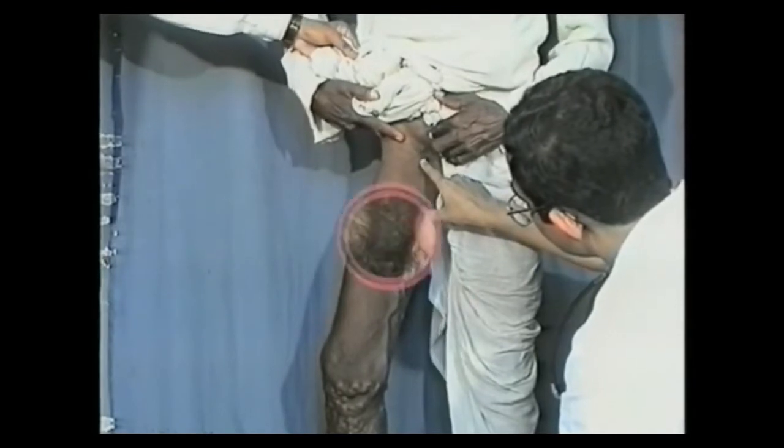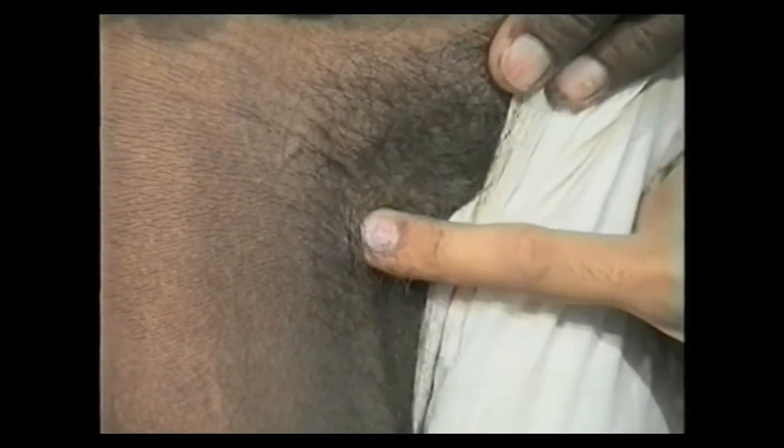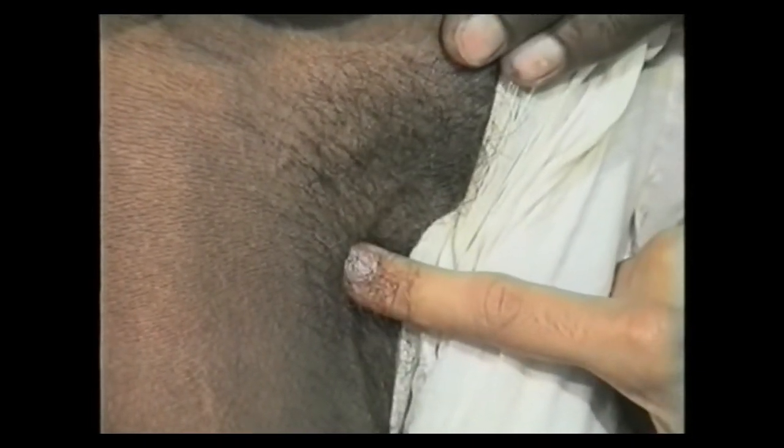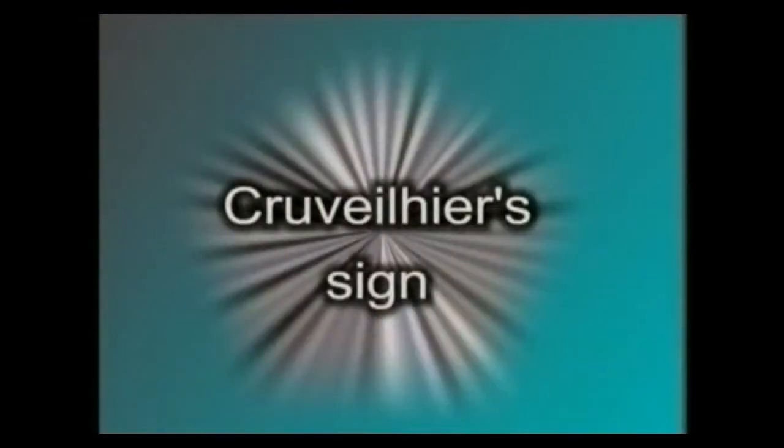Now keep your hand over the saphenous opening, which is located 3.8 centimetres below and lateral to the pubic tubercle, and ask the patient to cough. A cough impulse indicates saphenofemoral valve incompetence. If a saphenovarix is present, a thrill will be palpable when the patient coughs, as if a jet of water is entering and filling the varix. This is the Cruveilhier sign of saphenovarix. Note the expansile impulse in the saphenovarix when the patient coughs.